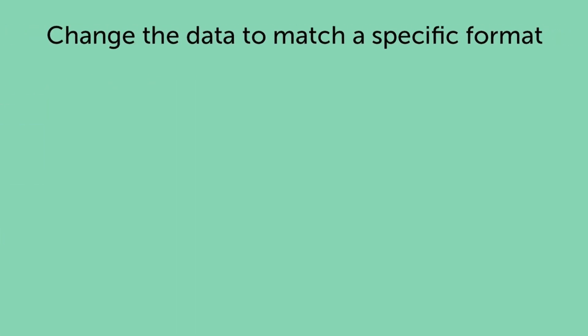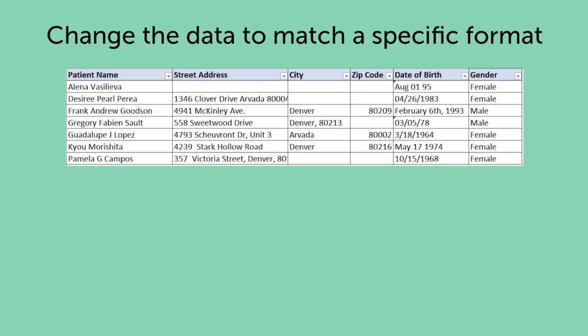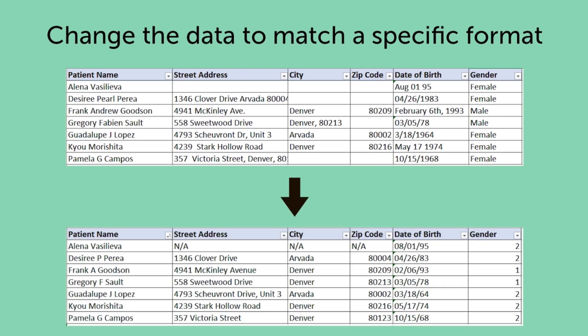Change the data to match a specific format. For example, if you have gender as a variable but it is entered in different formats when you receive the data, you can change 'male' and 'm' to a consistent value of 1, 'female' and 'f' to 2, and 'transgender' and 't' to 3 for your gender variable. This is called recoding data.